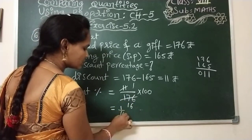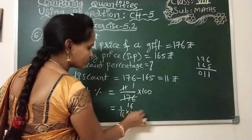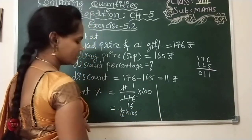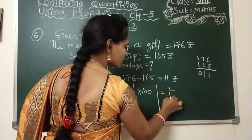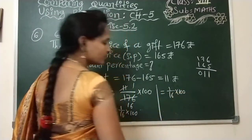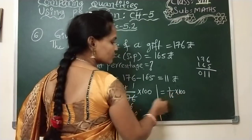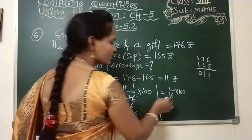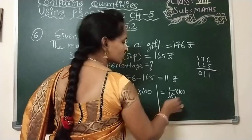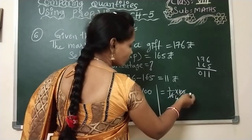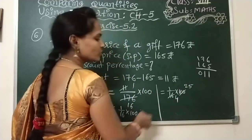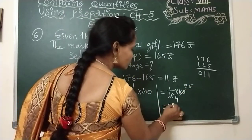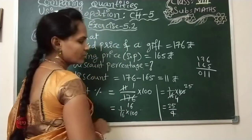Now here also we can do the cancellation with 4 table. So 4 into 4 is 16, and 4 into 25 is 100. After cancellation, this becomes 25 divided by 4.